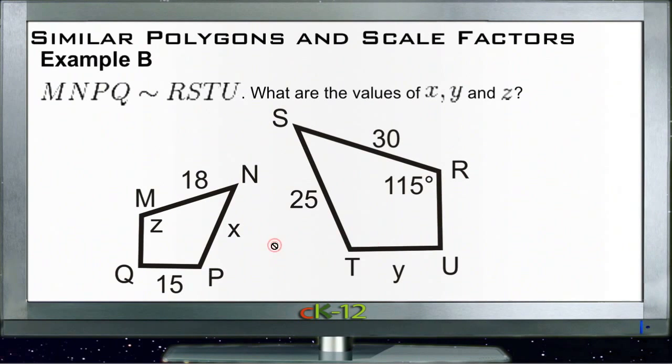Example B says that MNPQ, starting here at this corner, we have MNPQ is similar to RSTU. What are the values of x, y, and z? Okay, so what I'm seeing here is that if the two figures are similar, and since the letters specify the order that we're talking about, it looks like the right-hand figure here really needs to be inverted horizontally or flipped horizontally in order to actually lay over top of the other one.